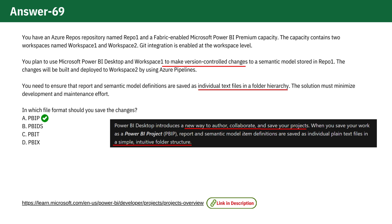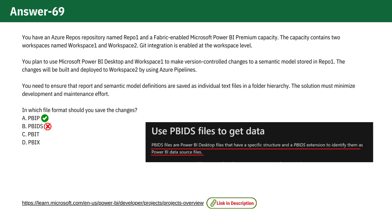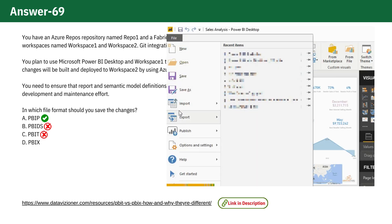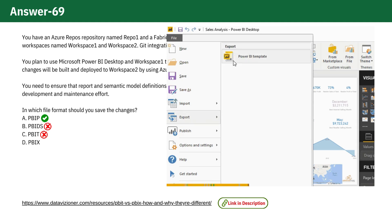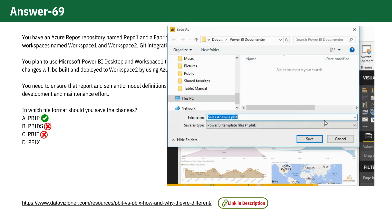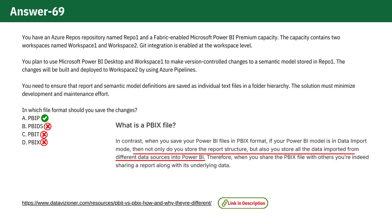Here's why the other options are not suitable. PBIDs files are specific to Power BI data sources and are used primarily for managing connection settings, not for saving project files. PBIT files are templates that provide a starting point for reports, but do not include actual data, making them unsuitable for complete project versioning. PBIX files contain both the report structure and the data imported from various sources, which is more than what's needed for simple project management and version control.